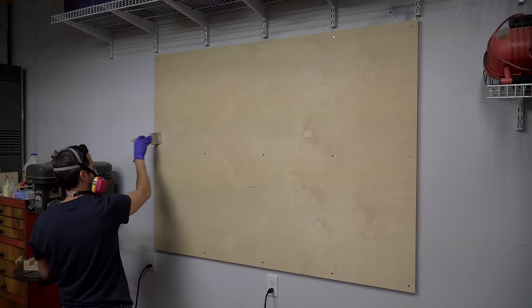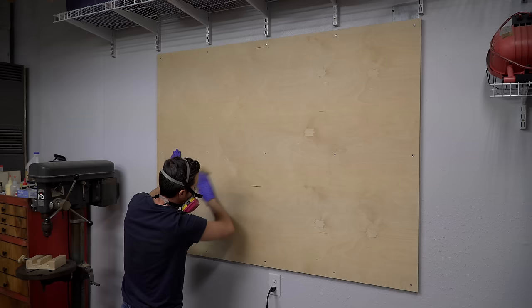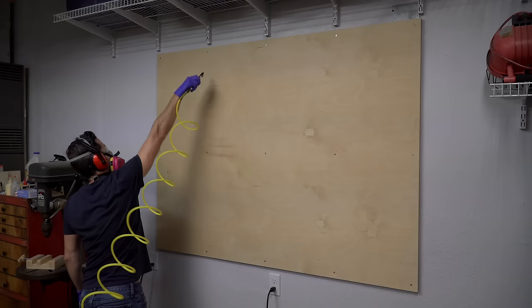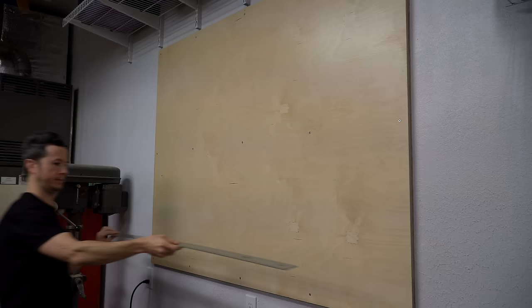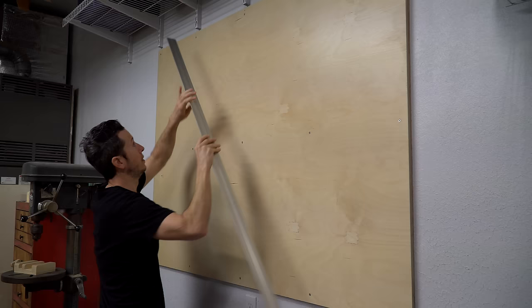I added 6 coats of polyurethane while being sure to lightly sand in between each coat. And by the way, the board came out nice and flat.